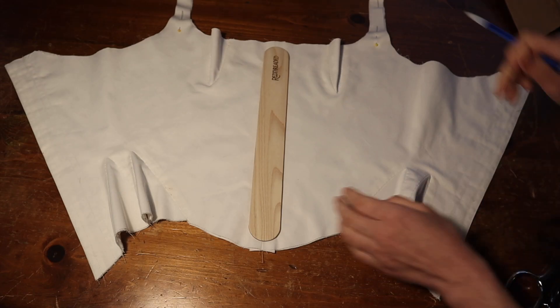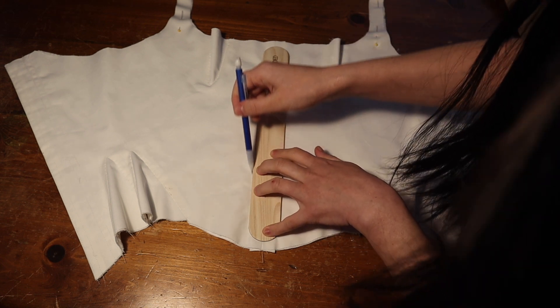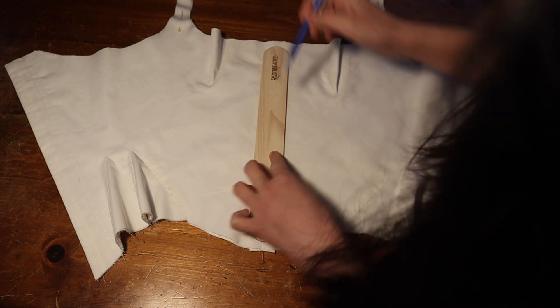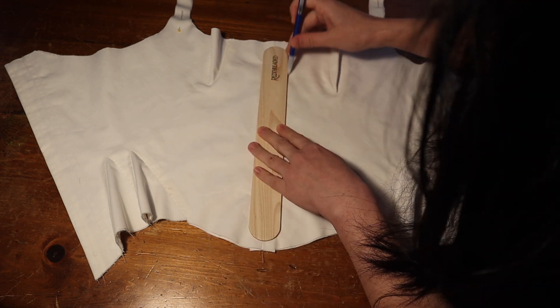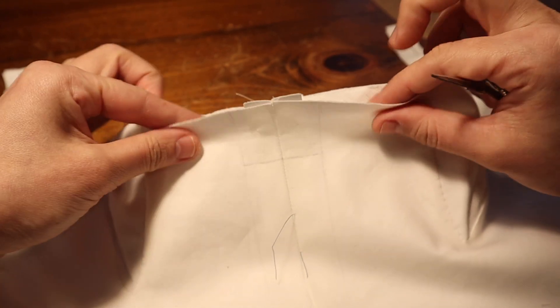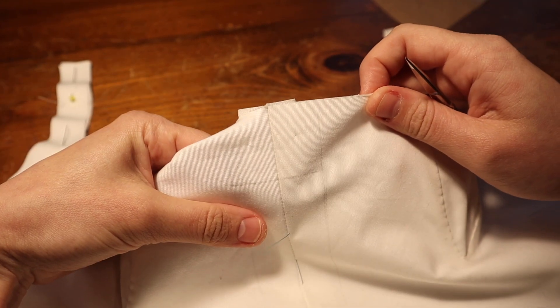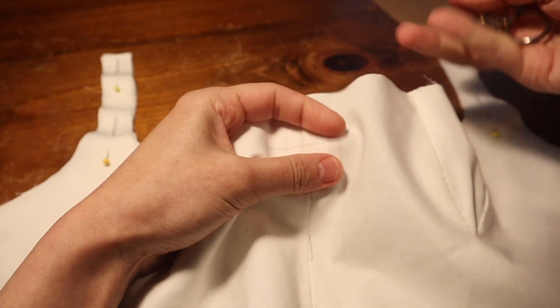And speaking of the busk, I'm now going to stitch the channel that will hold the busk in place. I'm using a 12 inch wooden busk from Red Threaded. And then I realized that I needed to cut and sew the opening for the busk, which I probably should have done before I attached the lining, but do as I say, not as I do.